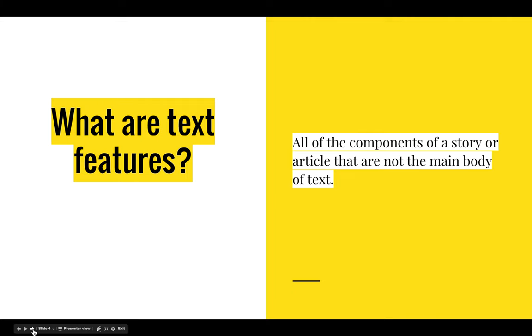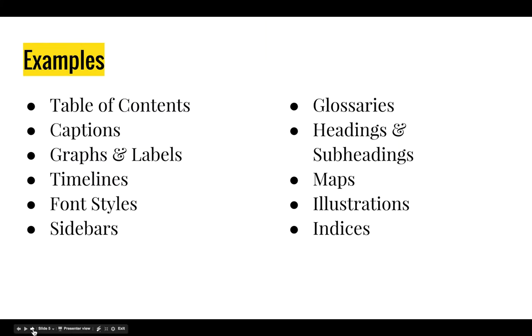What are the text features? Text features are all of the components of a story or article that are not the main body of text. So, let's see some examples of those. Different text features that we use with our students are a table of contents, captions, graphs and labels, timelines, font styles, sidebars, glossaries, headings and subheadings, maps, illustrations, and indices.